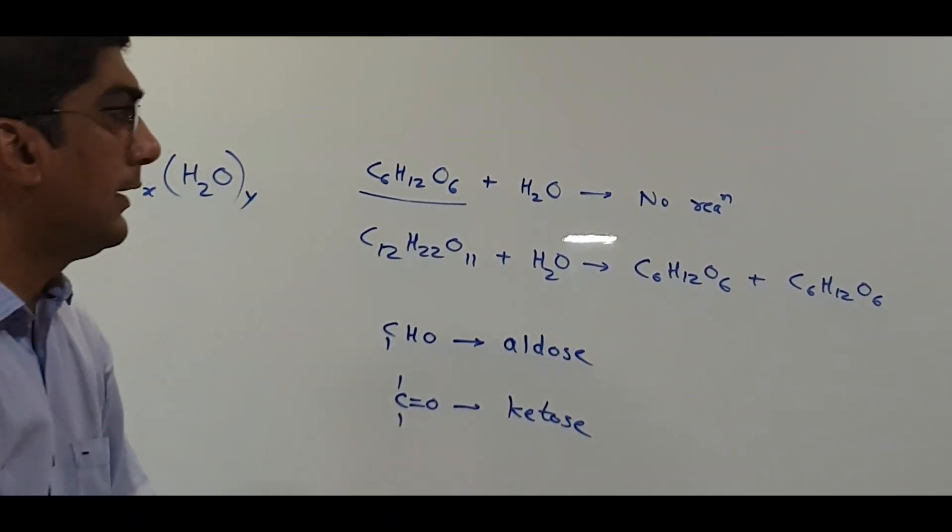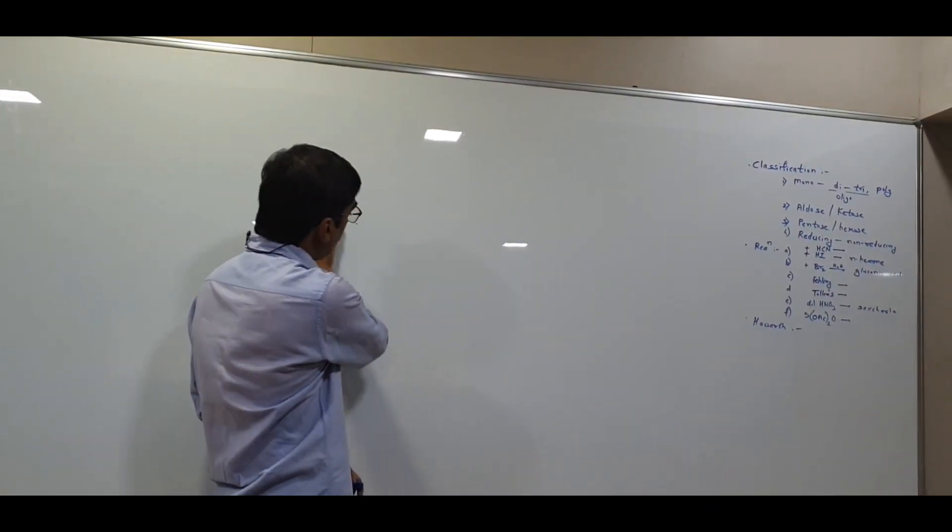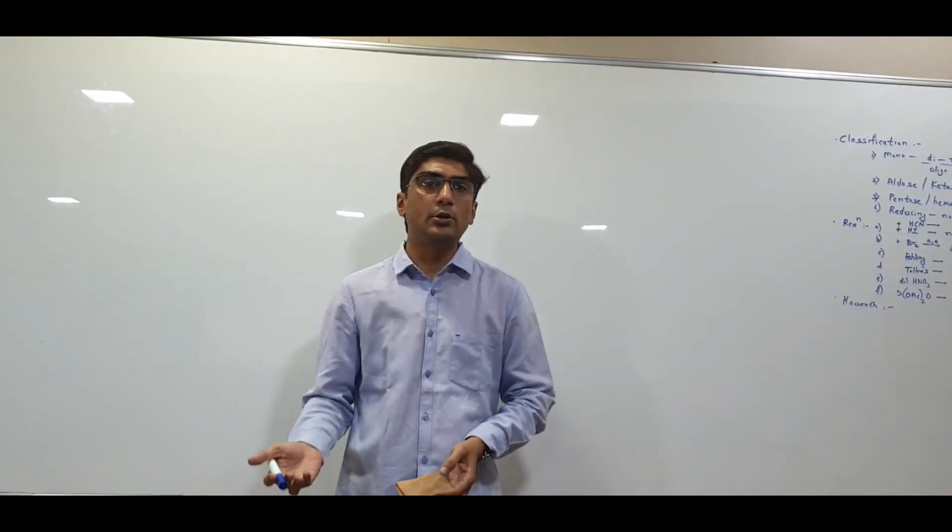Another classification of carbohydrates is on the basis of whether they are reducing sugars or non-reducing sugars — that is, whether they react with oxidizing agents like Fehling's solution, Tollens' solution, or bromine water. For example, if glucose reacts with Fehling's solution, glucose is a reducing sugar. If it doesn't react, it is called a non-reducing sugar. Normally, when free aldehyde or keto groups are present, the sugars are reducing sugars.